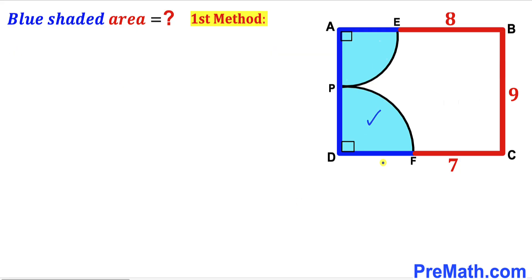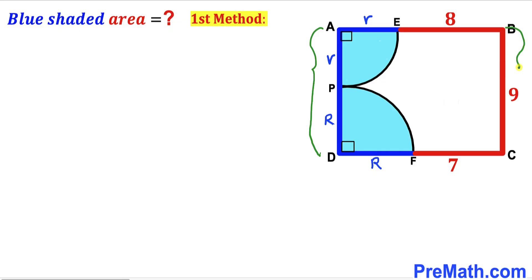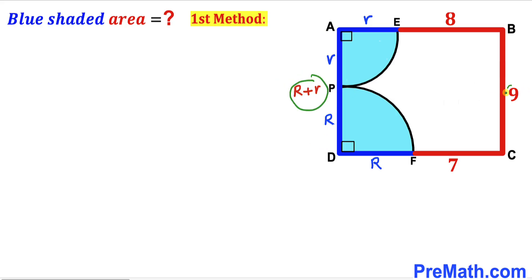Let's focus on the larger quarter circle. I am going to label its radius as uppercase R, so both radii are R. For the smaller quarter circle, I'll label its radius as lowercase r. Now, side AD equals side BC, and side AD is going to be R plus r, which equals 9. So we can write R plus r equals 9 — this is equation 1.